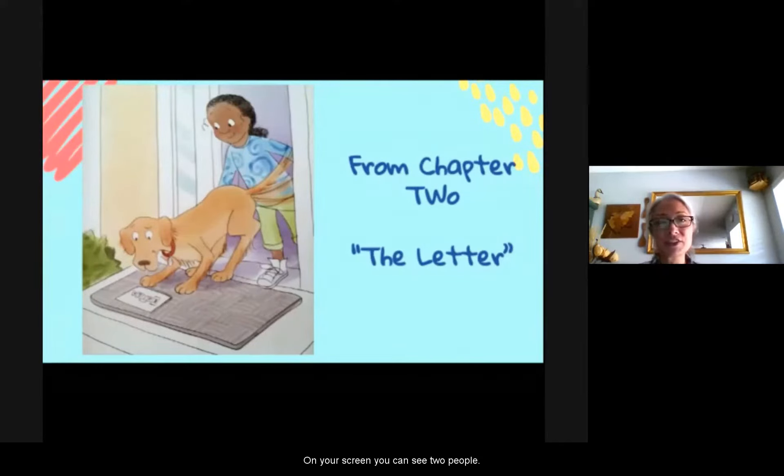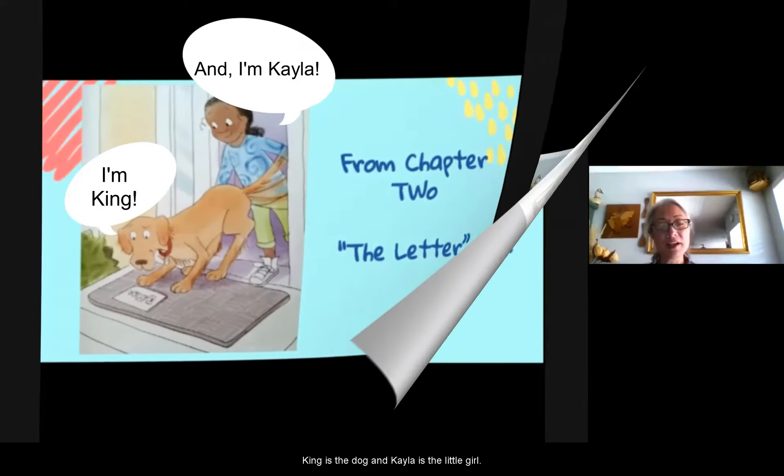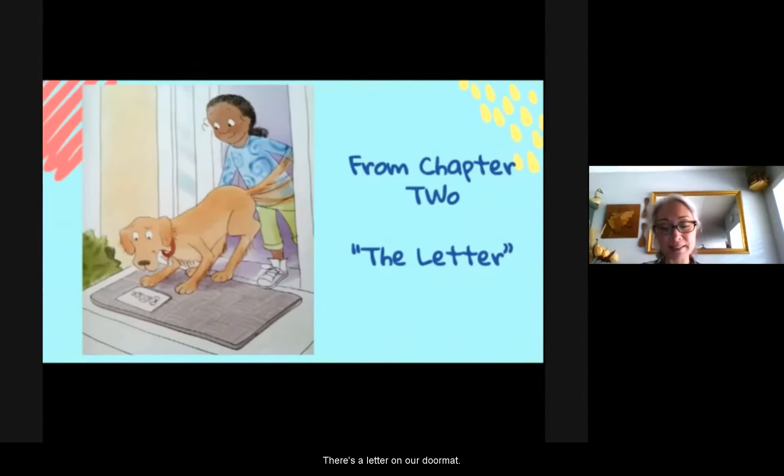So on your screen, you can see two people. These are two of the main characters of the book. King is the dog and Kayla is the little girl. There's a letter on our doormat. I pick it up and give it to Kayla. Thank you, King, she says with a smile. We go back inside. Kayla opens the letter. Her smile disappears.